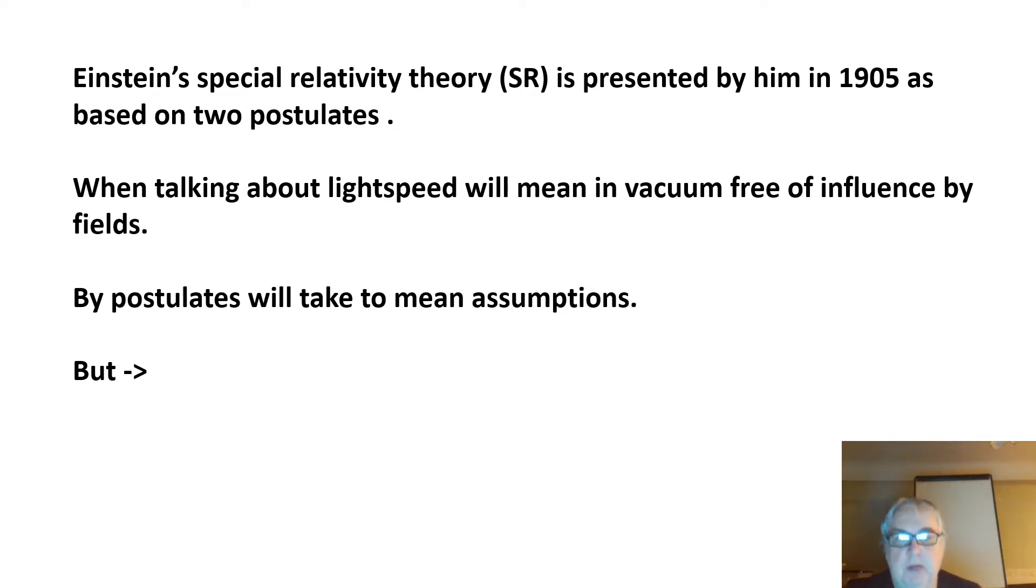by him in 1905 and is supposed to be based on two postulates: the principle of relativity and the constancy of light speed. When I'm talking about light speed, I mean in a vacuum free of influence of fields such as gravity. By postulates, I take them to mean assumptions.